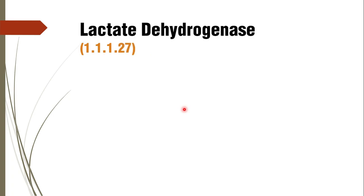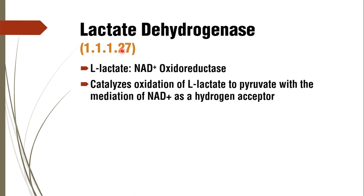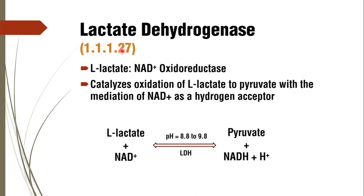The next Enzymatic Cardiac Marker is lactate dehydrogenase. Its enzyme classification number is 1.1.1.27, and its name is L-lactate NAD+ oxidoreductase. It catalyses the oxidation of L-lactate to pyruvate with NAD as a hydrogen acceptor. The typical reversible reaction is: L-lactate + NAD⁺ ⇌ pyruvate + NADH + H⁺.